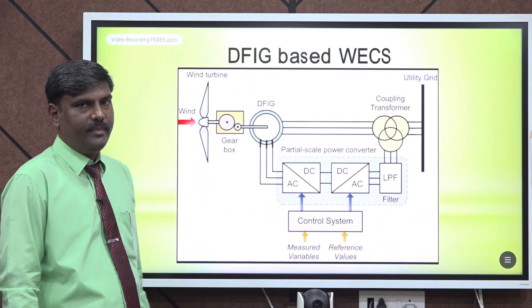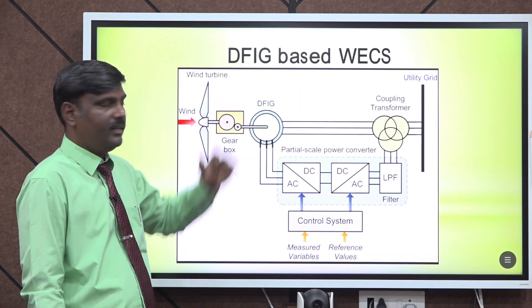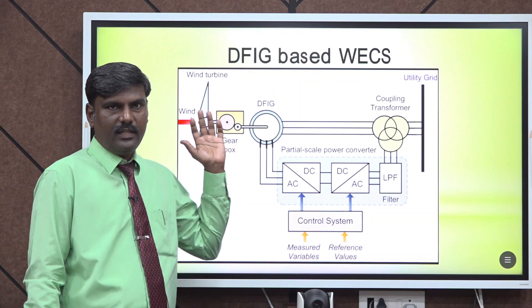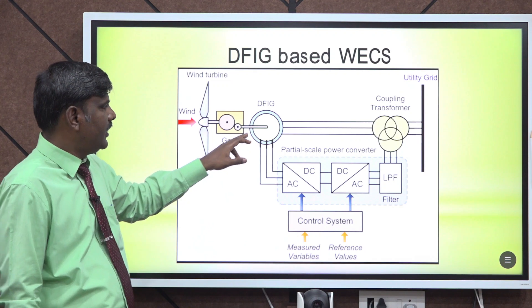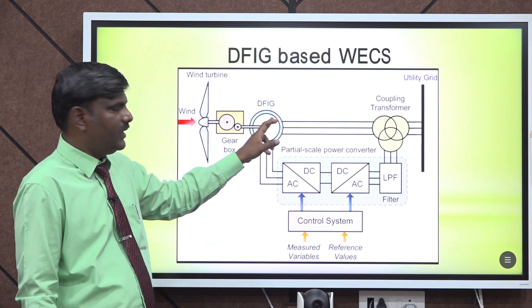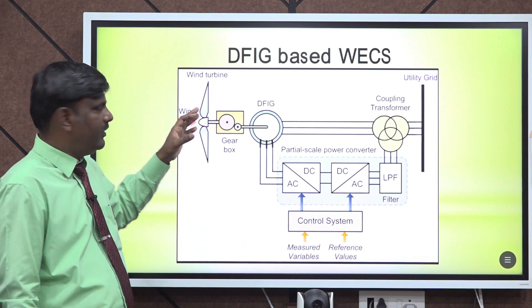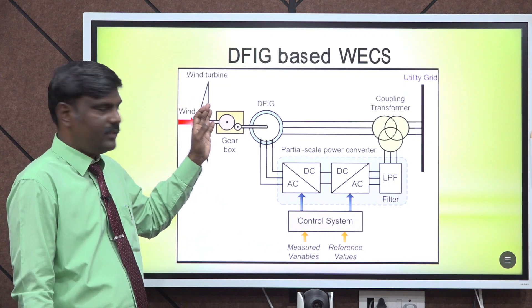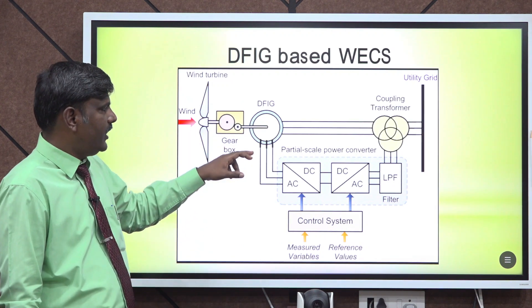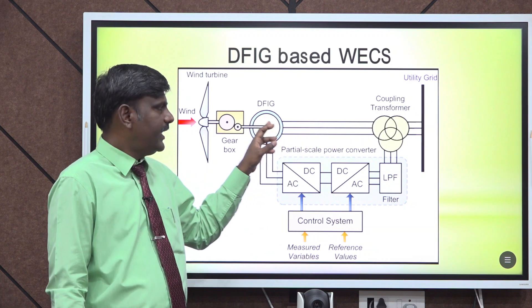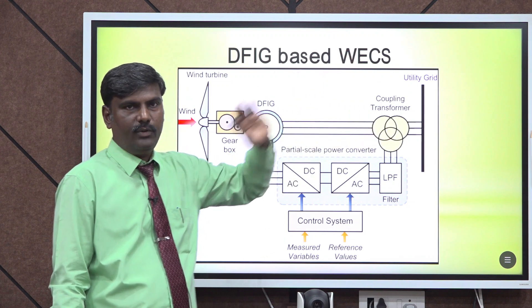Next we see DFIG based wind energy conversion system. DFIG is nothing but doubly fed induction generator — this generator is nothing but a slip ring induction motor based generator. In a slip ring induction motor, connections are established from the rotor as well as the stator. As with the squirrel cage induction motor, we receive wind power with the help of a turbine and then through a gearbox we connect the shaft of the DFIG. In the stator line there is no power converter — it is directly fed to the transformer and from the transformer it is fed to the utility grid.